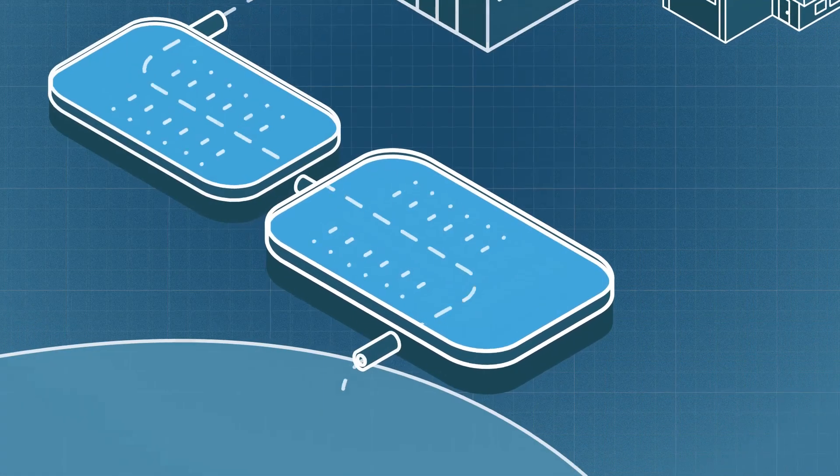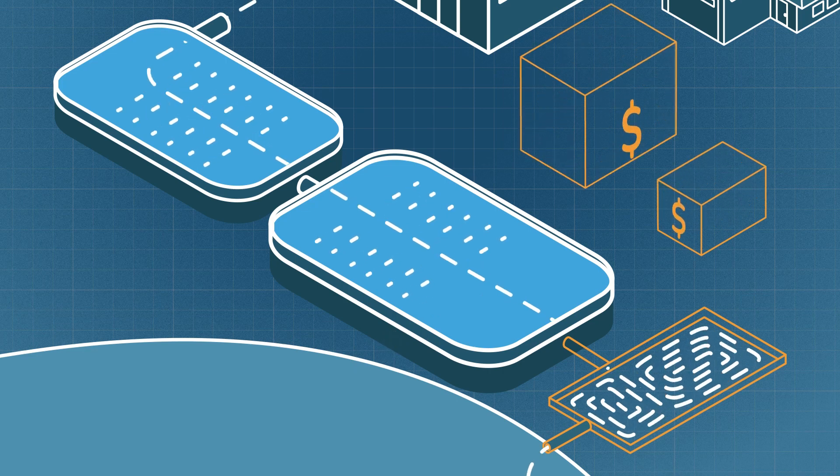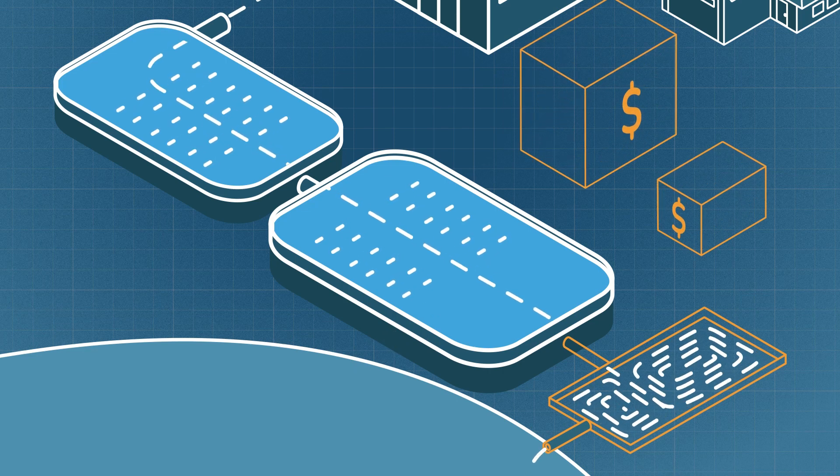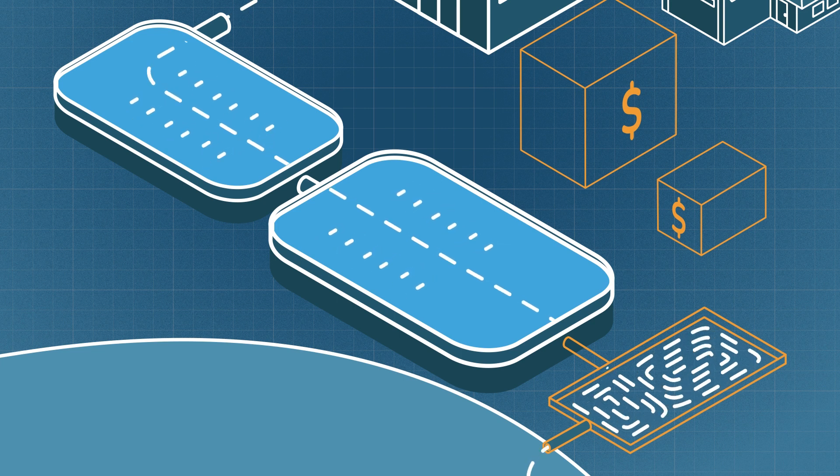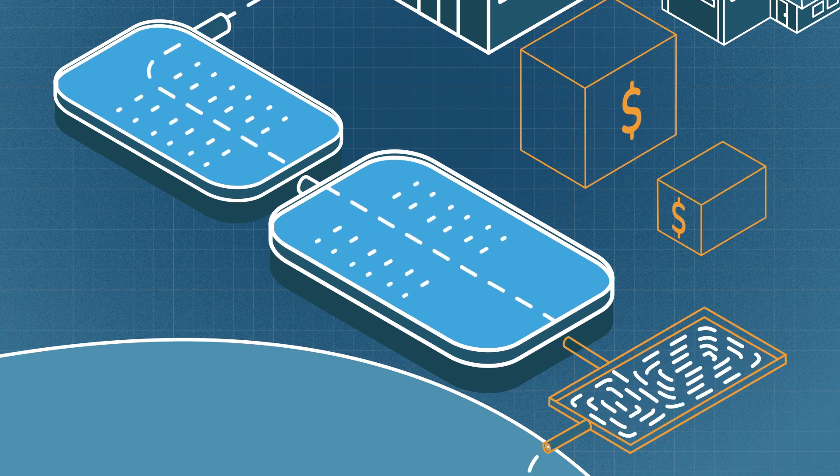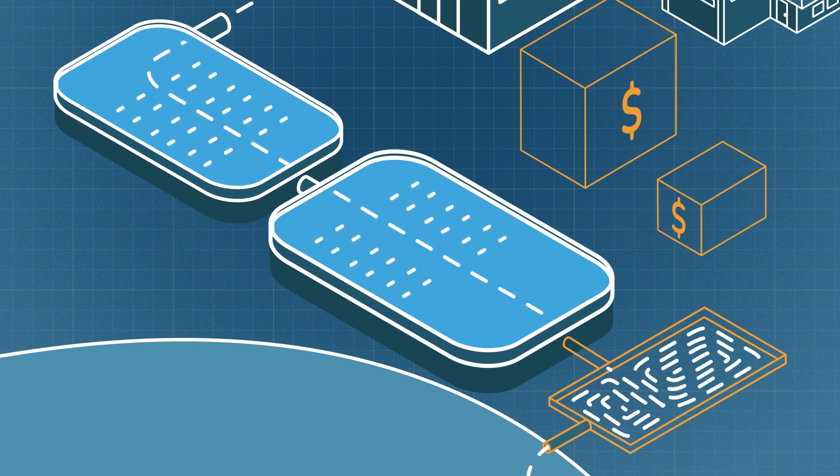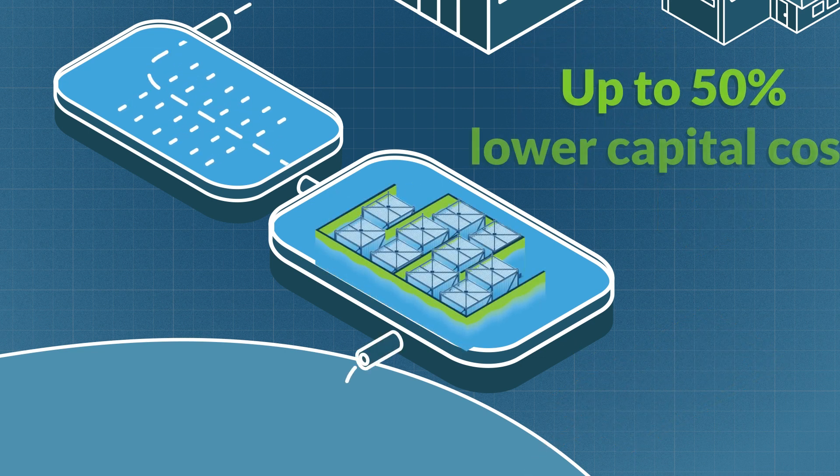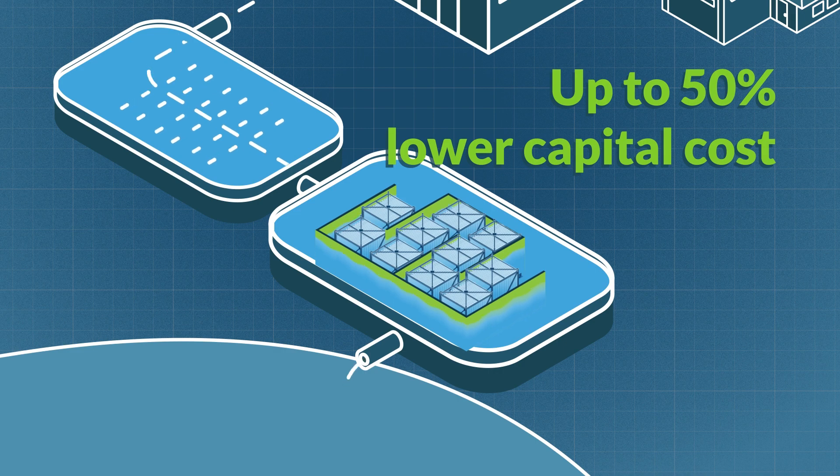Other technologies such as MBBRs or trickling filters require additional containers for their media, which expands the plant footprint and adds cost for buildings, tanks, pipes, pumps and control equipment. Biocord's simple design means its capital cost can be as much as 50% lower than those alternatives.